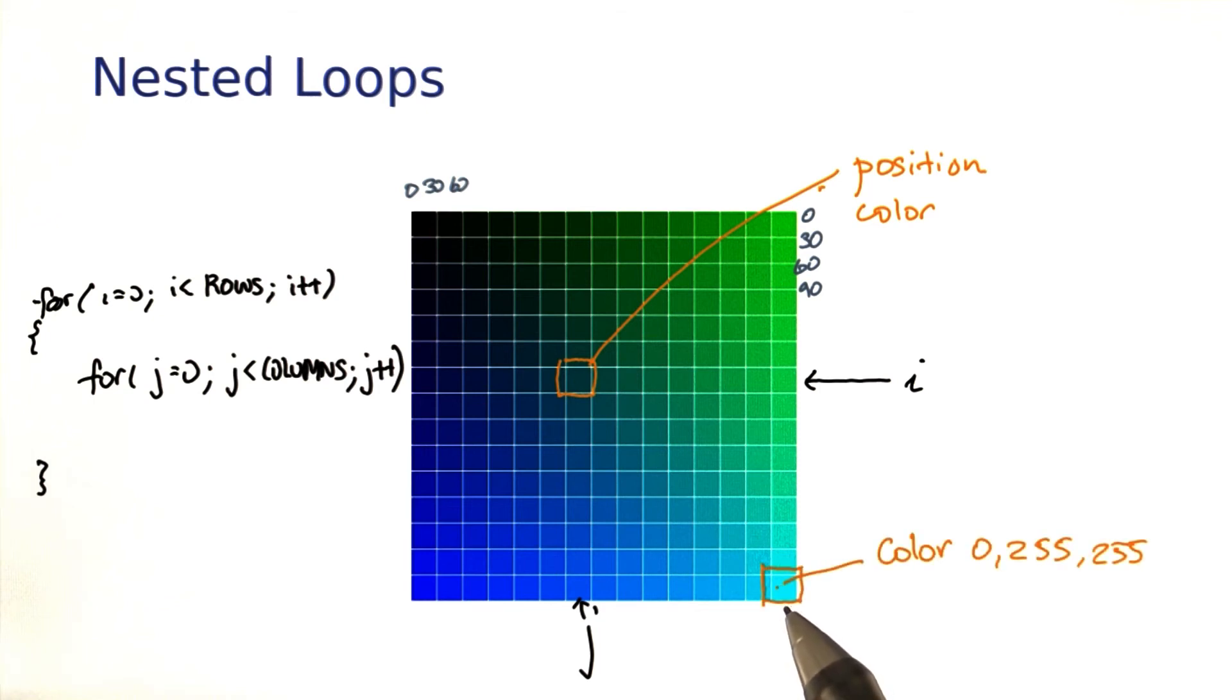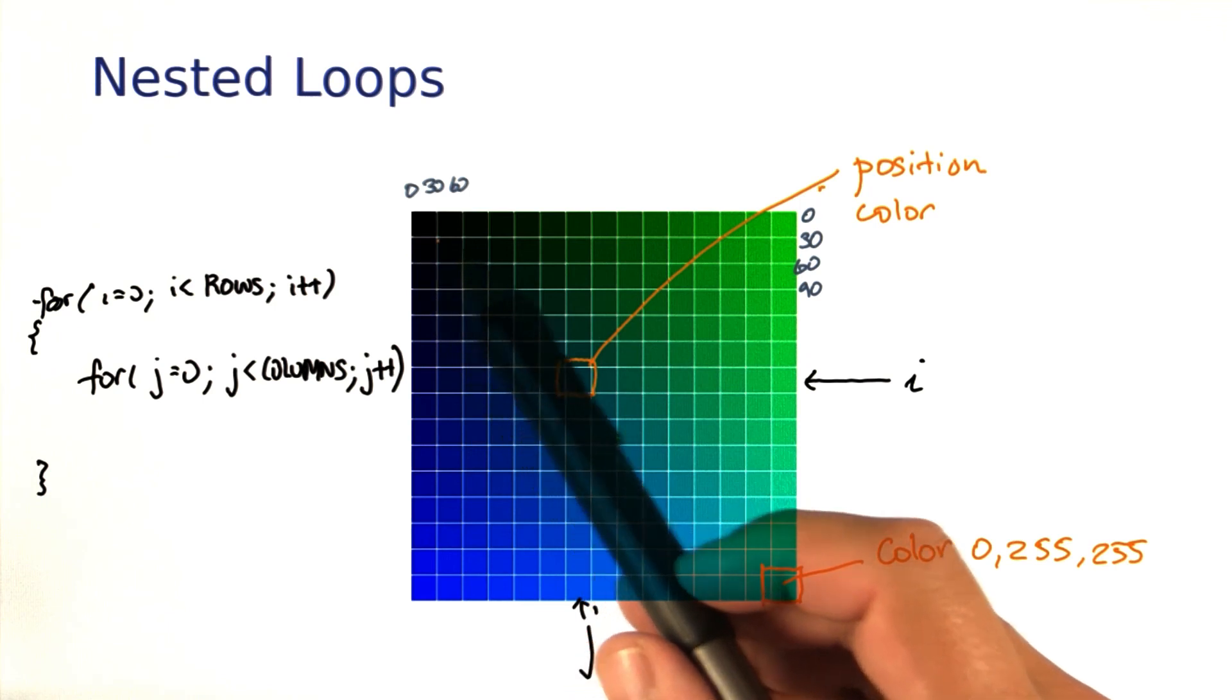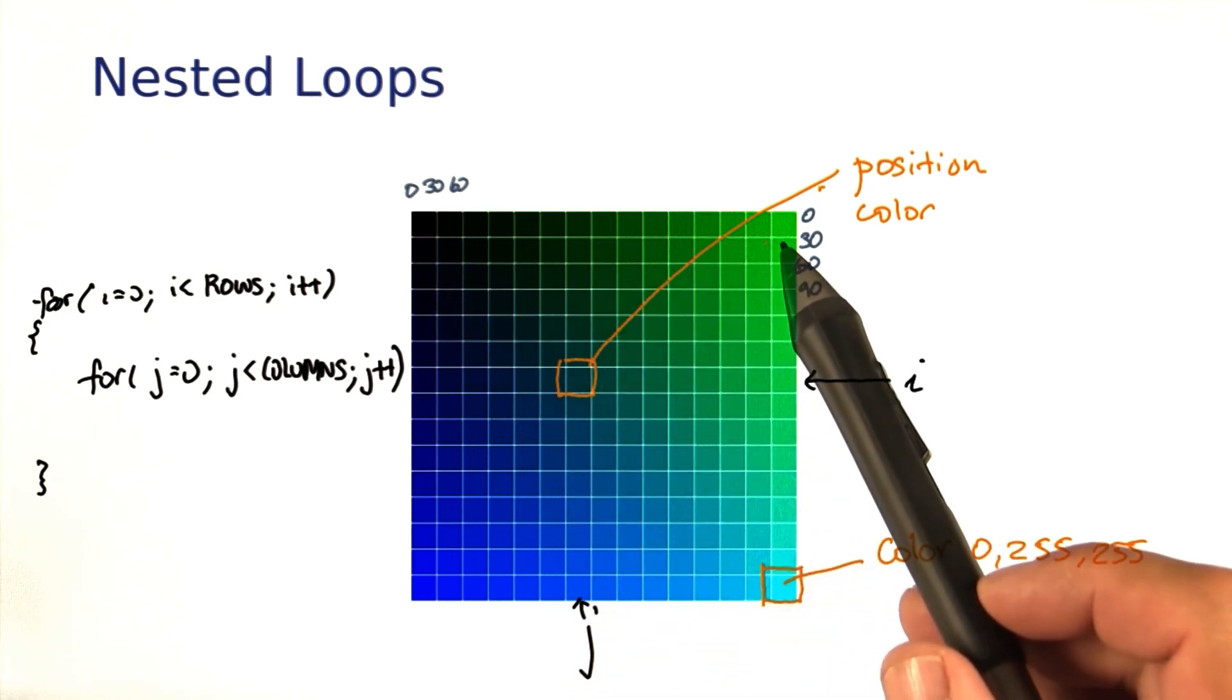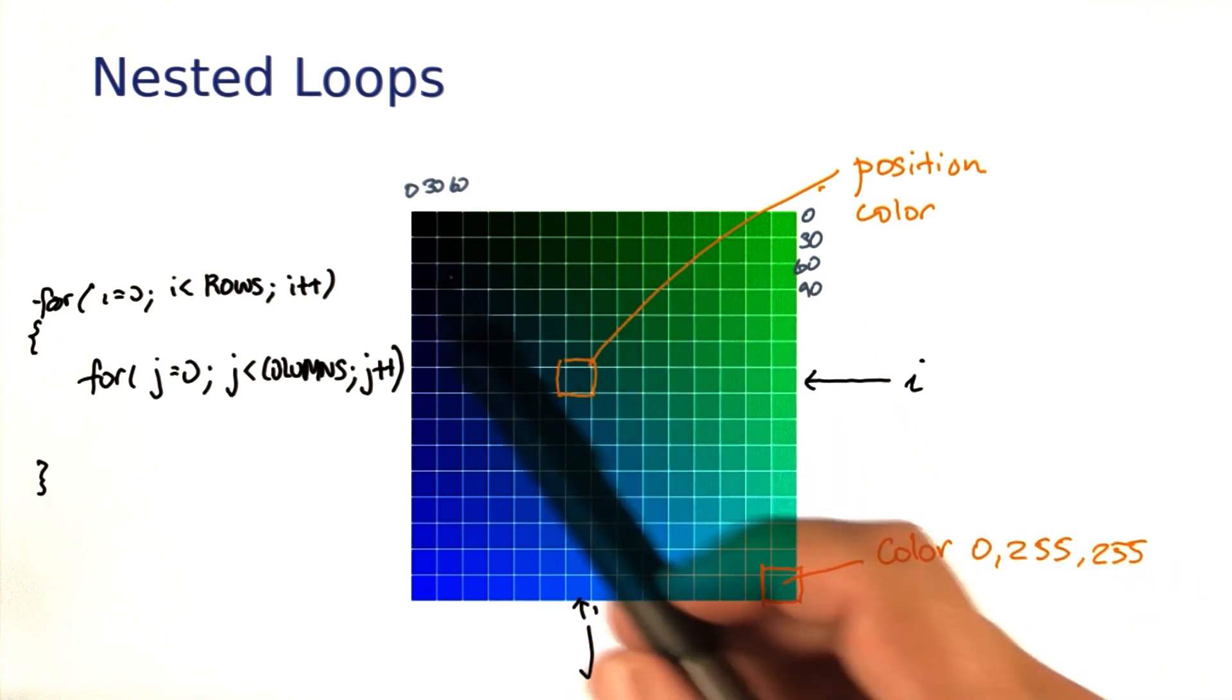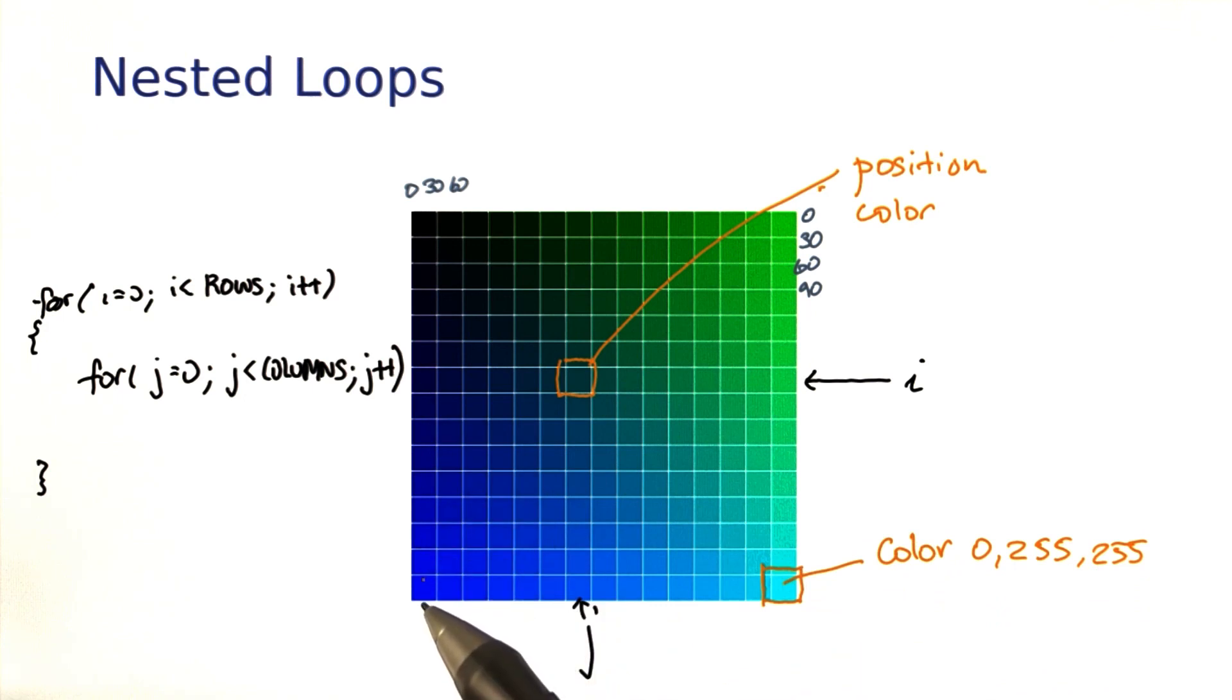How about the colors? We want the square down here to have green 255 and blue 255. All the reds are 0. So you want the greenness to vary from 0 to 255 in equal increments in this direction. And you want the blueness to vary from 0 to 255 in equal increments in that direction. You just have to figure out the increments.